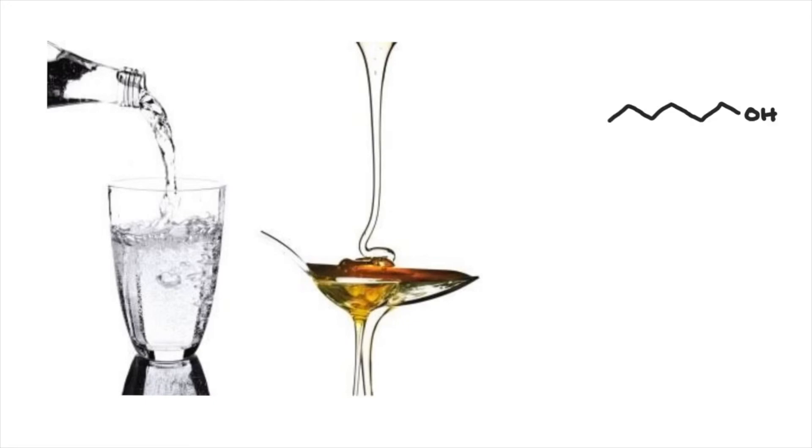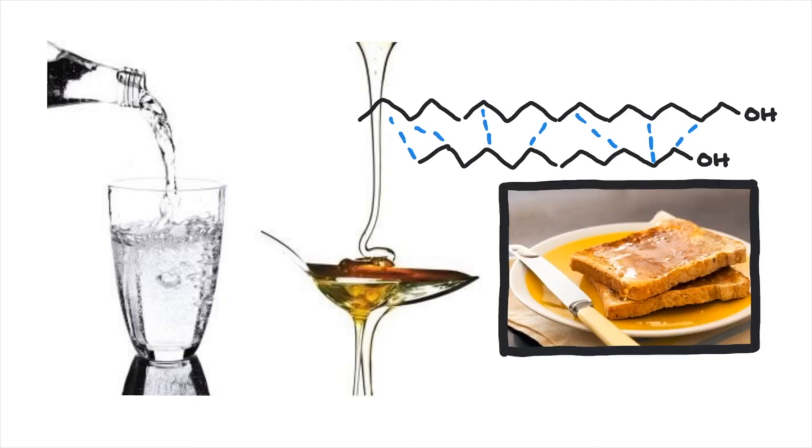So, when the hydrocarbon chain increases, so do the intermolecular forces between neighbouring molecules. Alcohols become more viscous as they get larger. So, if you're struggling to spread the honey on your toast, just weaken those intermolecular forces. Too easy.